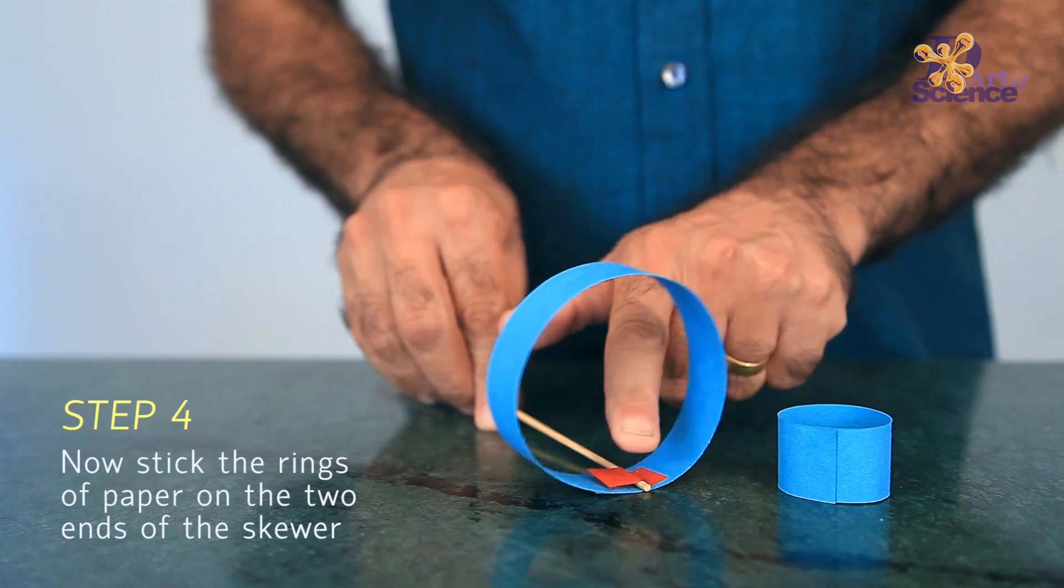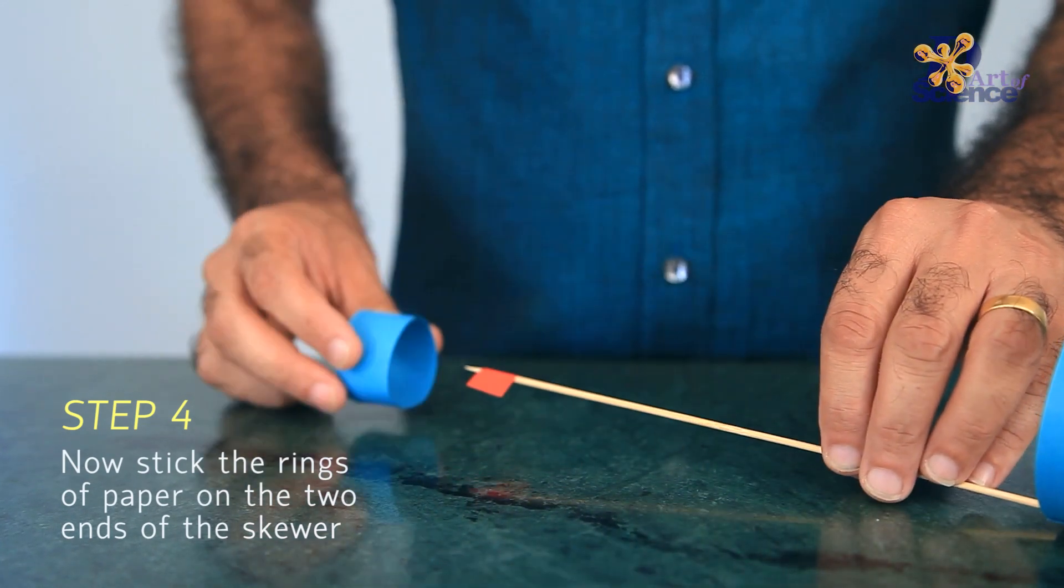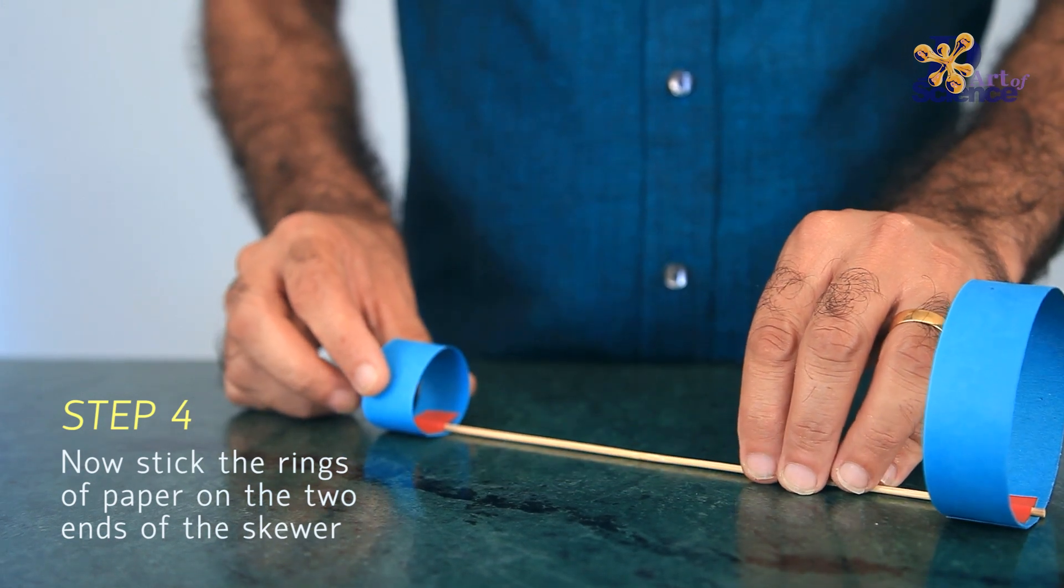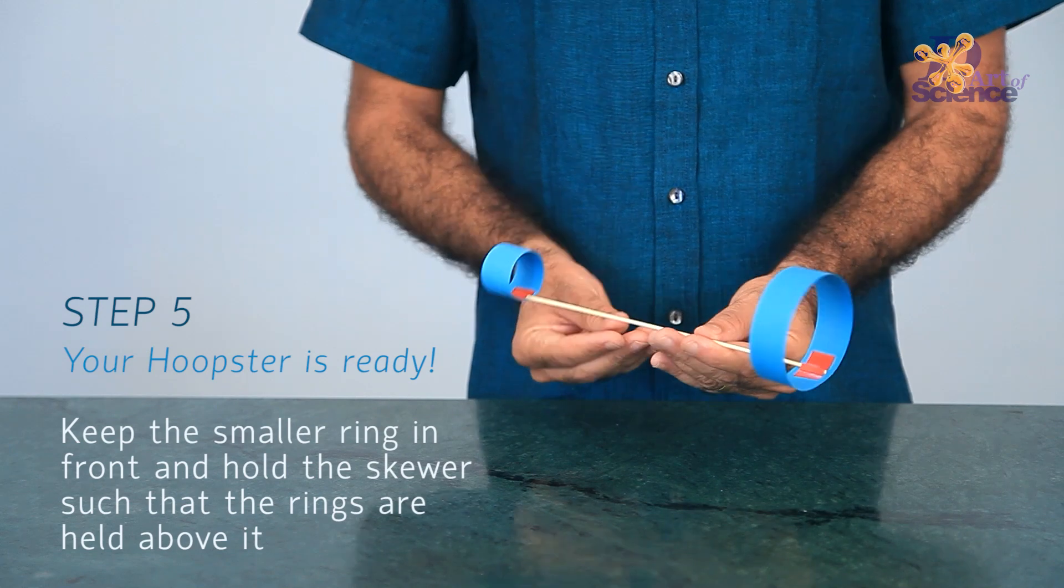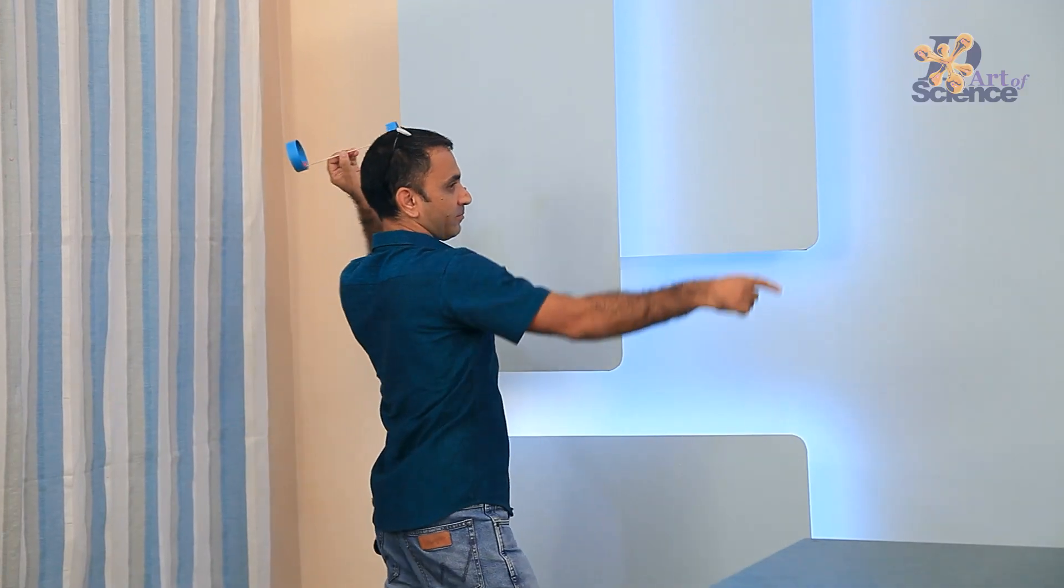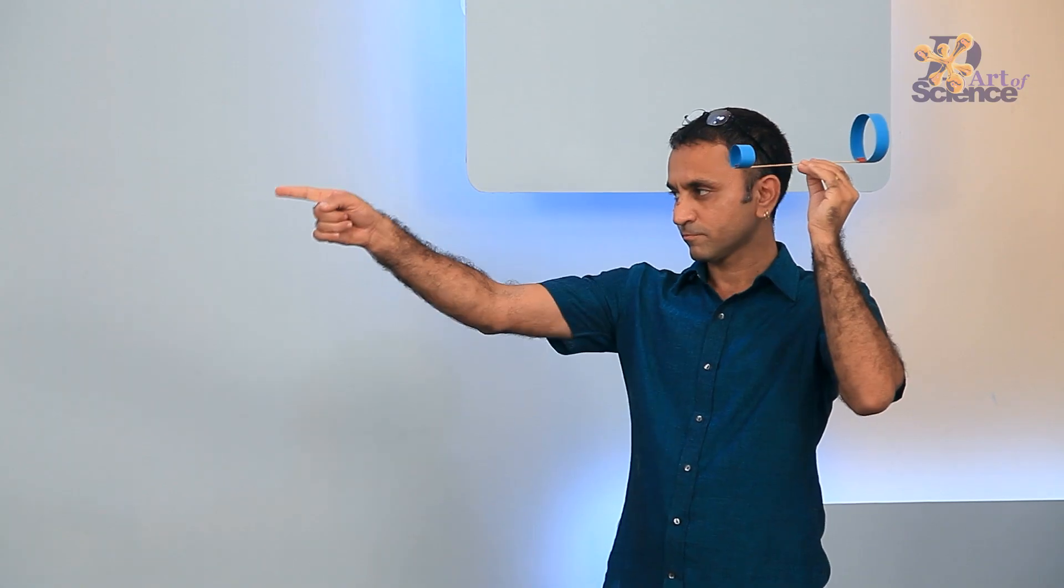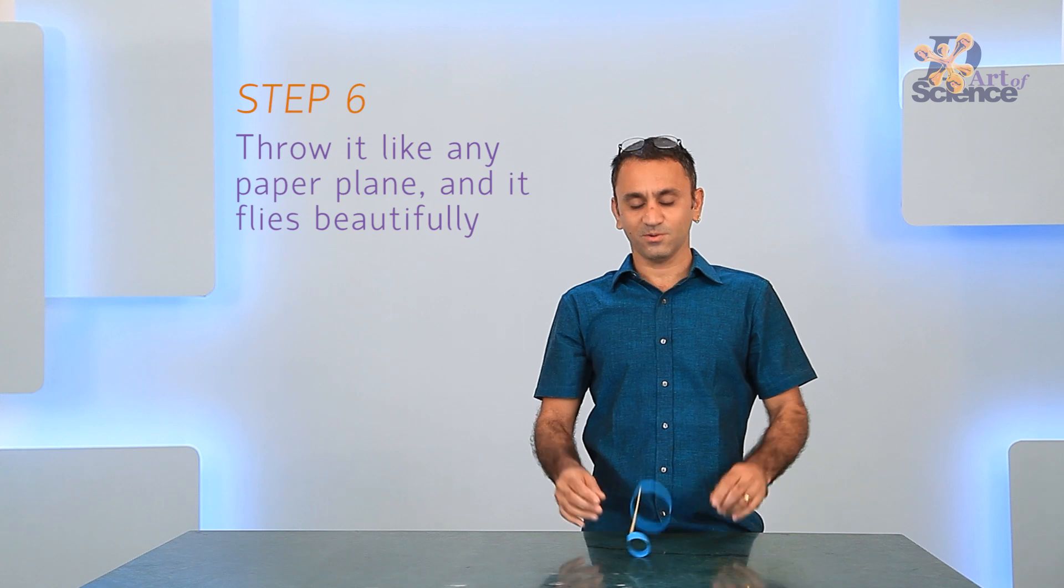The place where the skewer is attached to the hoops, that area becomes a bit heavy. When we launch the plane, this heavier part naturally keeps the plane from turning over. By using these two hoops and understanding the science of balance and aerodynamics, we have created a flying marvel that defies gravity.